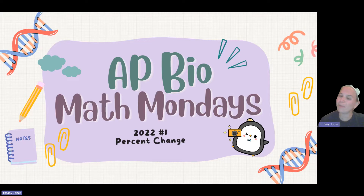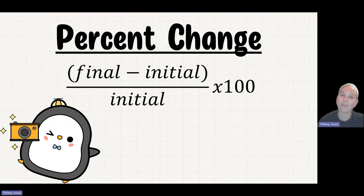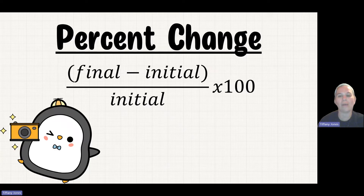Today we do a little math — looking at percent change using question number one from the 2022 exam. This formula is not on our formula sheet. It's final minus initial over initial times 100. Multiplying by 100 is what allows it to move from a decimal into that percent format.